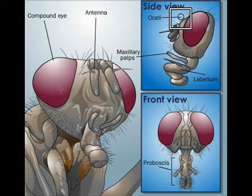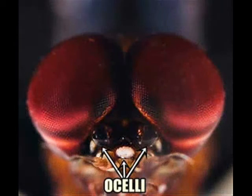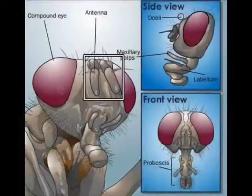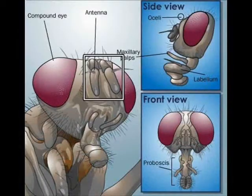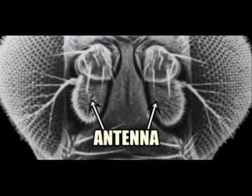Houseflies also have three additional simple eyes called ocelli, located between the two compound eyes, which are responsible for keeping track of and moving towards sunlit areas. Houseflies depend on their keen sense of smell, provided by their antennae.